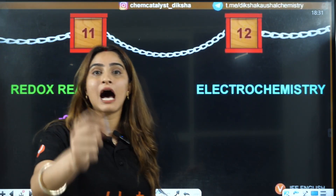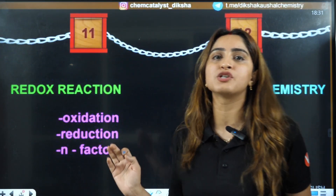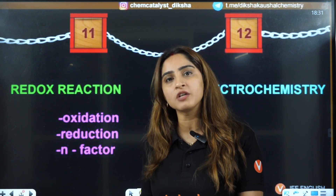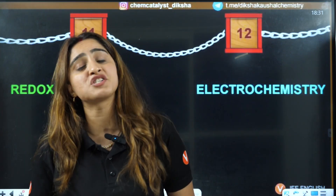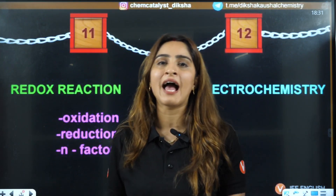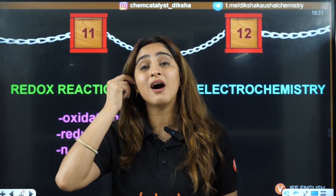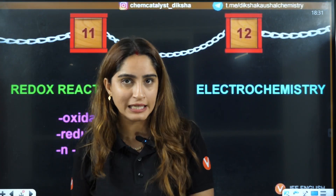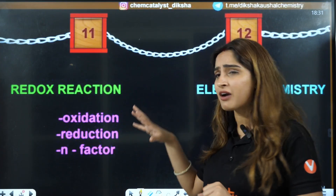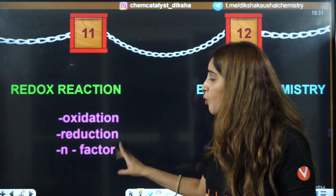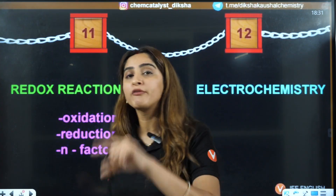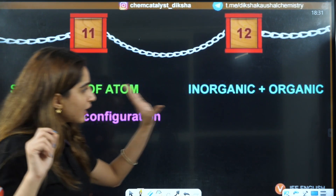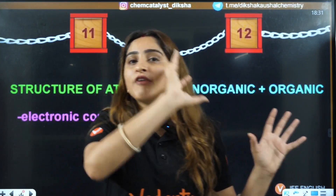Next, if you want to start Electrochemistry, firstly Class 11 Redox Reactions should be on your tips. We usually skip balancing of reactions, but you should know at least one method of balancing reactions — because balancing is needed not only in electrochemistry but in other sections of chemistry as well. Balancing of reactions, oxidation-reduction, and n-factor calculation are most important before starting Electrochemistry.